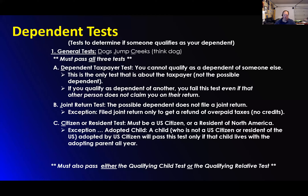The joint return test: the possible dependent does not file a joint return. They cannot file a joint return — they can only file a return themselves. The only exception is they can file a joint return only to get a refund of overpaid taxes.